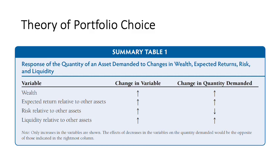All four factors — wealth, expected return, risk, and liquidity — when increased lead to a higher quantity demanded in all cases, except risk, as expected.